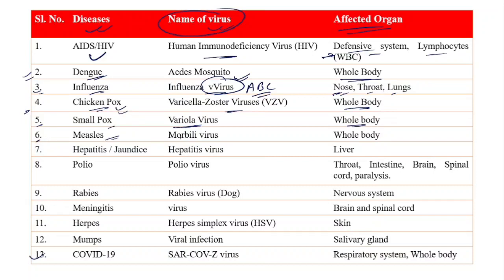Number six: Monkeypox is also a kind of pox caused because of the Monkeypox virus — the Monkeypox virus affects the whole body. Number seven: Hepatitis and Jaundice are caused because of the Hepatitis virus, and the affected organ is the liver. Jaundice or Hepatitis attacks the liver — they cause disease through the pancreas bile juice level.